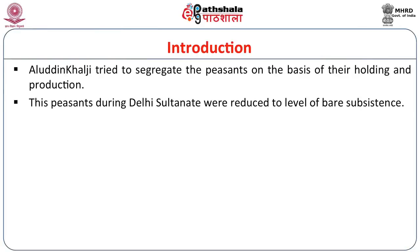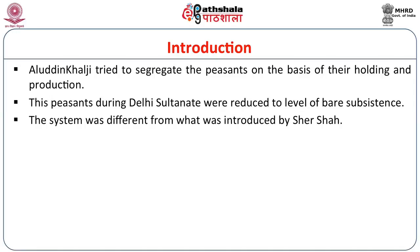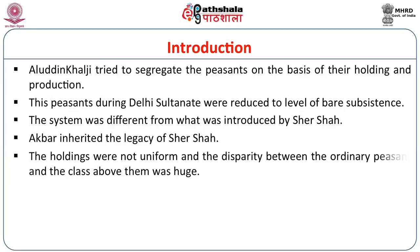The peasants during the Delhi Sultanate were reduced to the level of bare subsistence because of the high revenue. The system was different from what was introduced by Sher Shah. Sher Shah for the first time tried to scientifically measure the land under cultivation and fix the revenue depending on productivity. But Sher Shah's time was brief and he could not complete what he started. Akbar inherited the legacy of Sher Shah. The holdings in India were never uniform and the disparity between the ordinary peasant and the class above them was huge — this was the real cause of the problems in revenue collection.